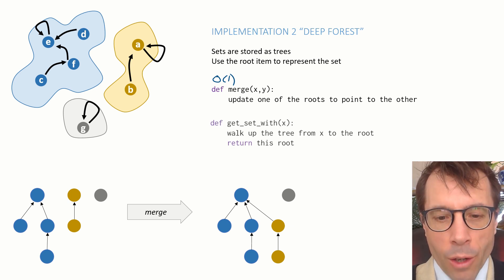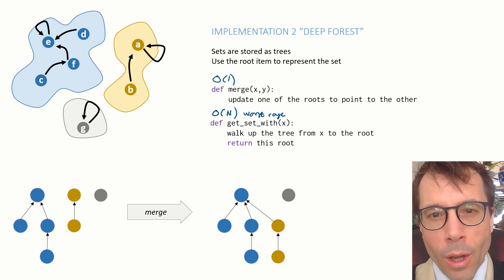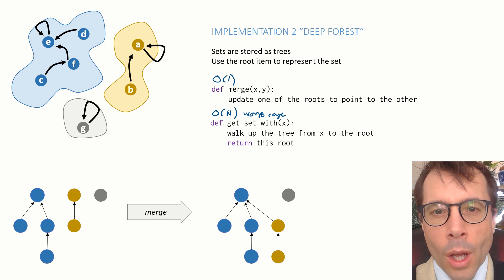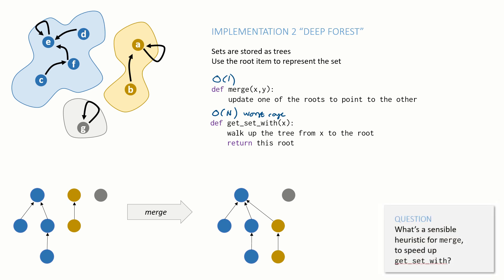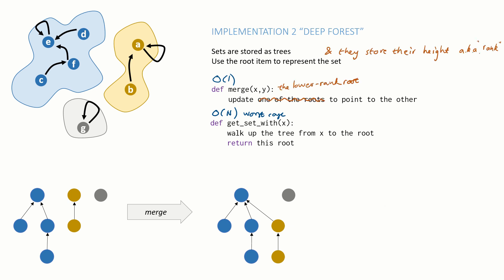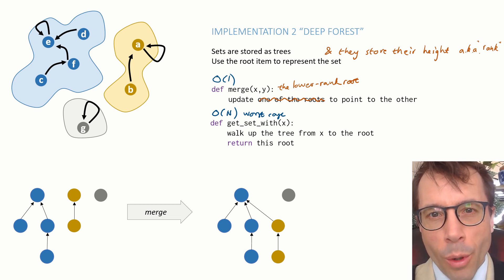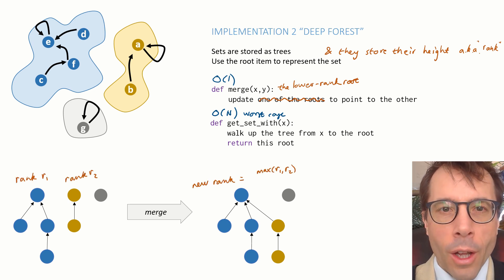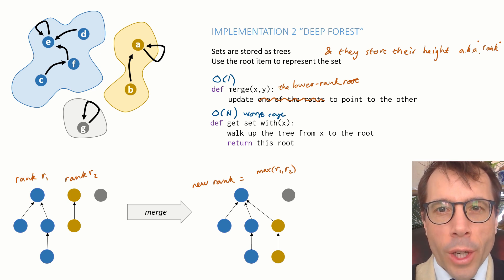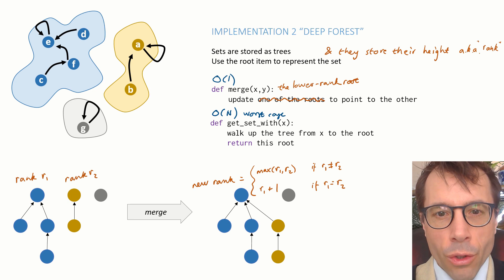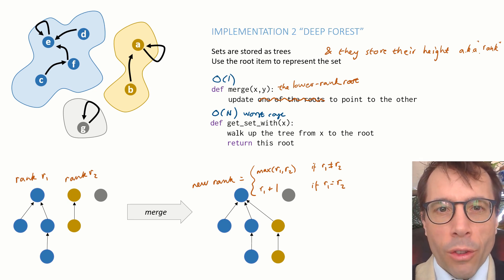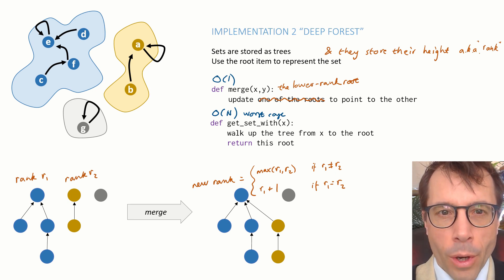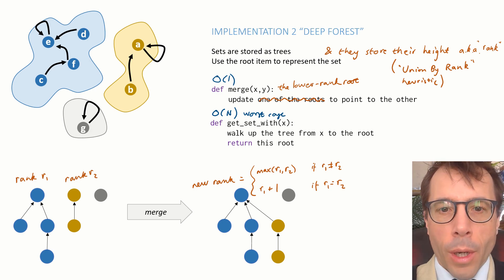Once again, though, there is an obvious speedup. Why not pause the video and see if you can come up with it? Here's the obvious speedup: for each tree, we'll also store its height, also known as rank. And then when we merge two trees, we'll just pick the lower-rank tree to be a child of the larger-rank tree. For example, if the blue tree has rank 2 and the yellow tree has rank 1, when we make the yellow tree a child of the blue tree, the resulting rank hasn't changed — it's still 2. Ranks only increase when we join two trees of the same rank. So this strategy should keep ranks low in the data structure as a whole, and this should speed up the GetSetWith operation. This is called the union by rank heuristic.